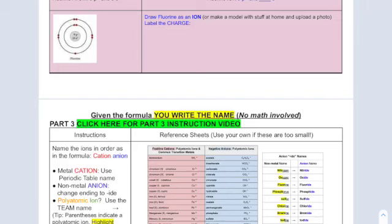Okay, this is part three. Given the formula, you write the name. There's no math involved with this part.